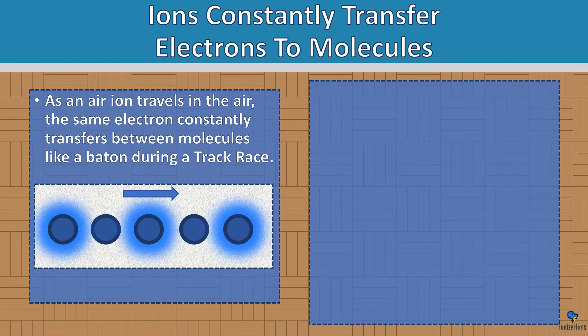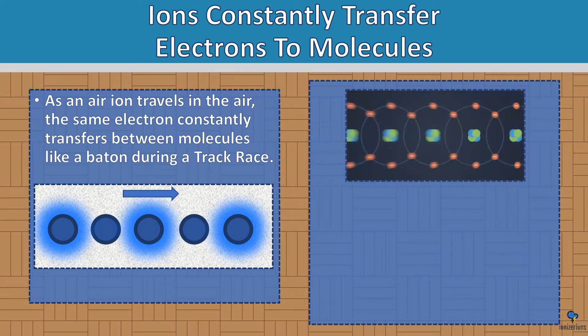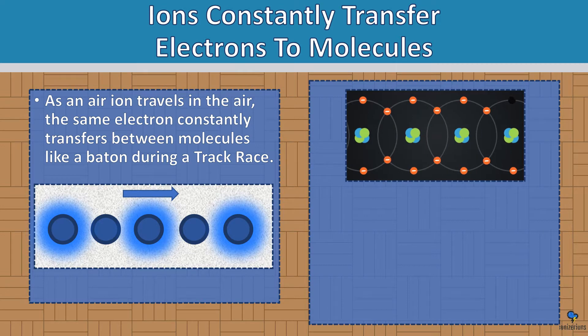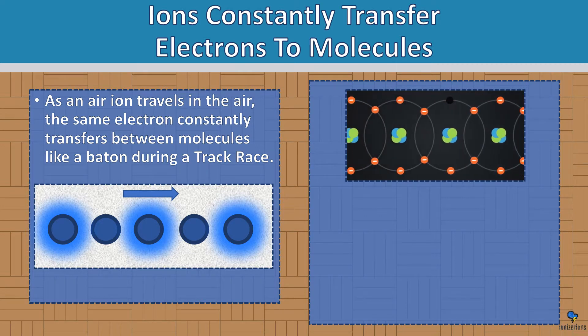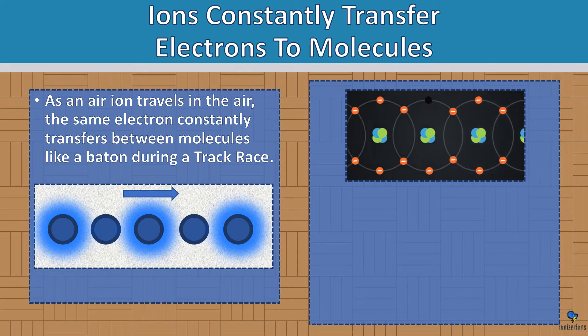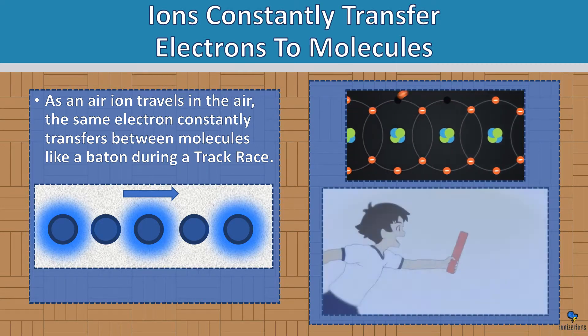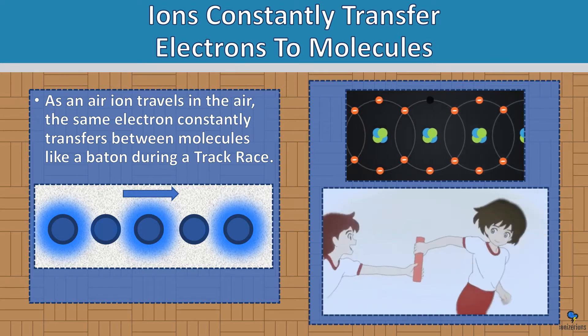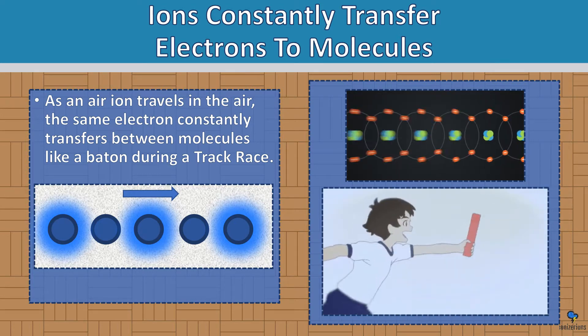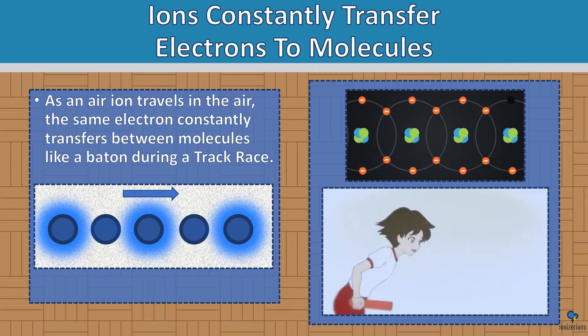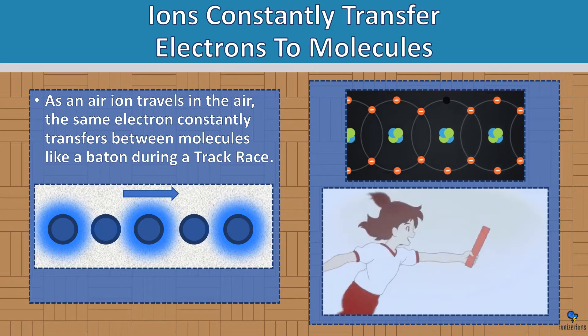Ions constantly transfer electrons to molecules. As an air ion travels in the air, the same electron constantly transfers between molecules like a baton during a track race. As you can see in the animated GIF, the electron bounces from one molecule to the next — just like passing a baton during a track race. That's how these ions evolve in the air.